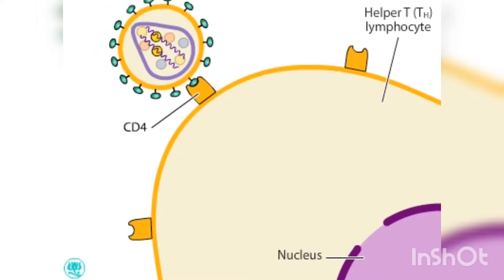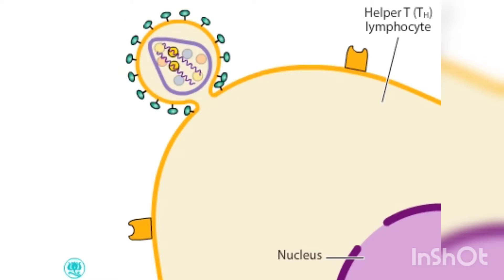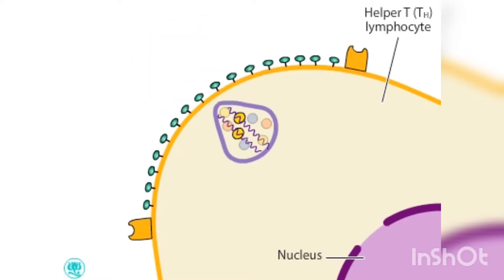The binding to CD4 and other cell surface proteins called co-receptors allows the virus to fuse with the cell. The lipid membrane of the virus incorporates into the cell's membrane while the viral core enters the host cell.